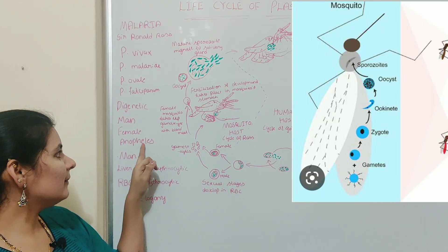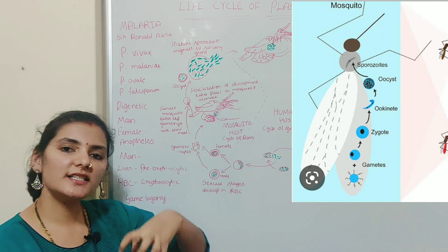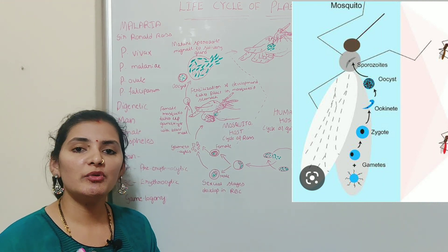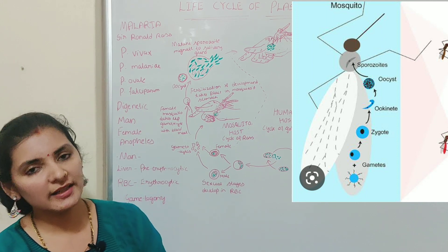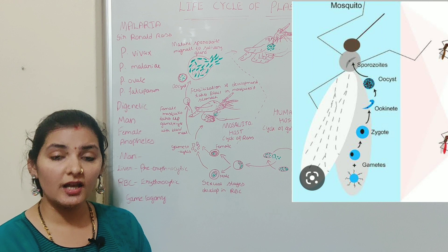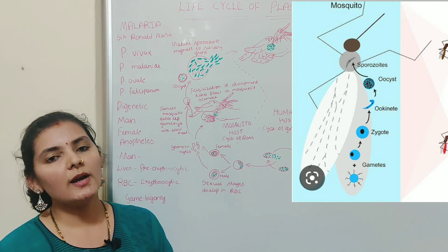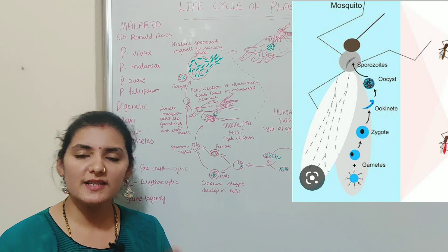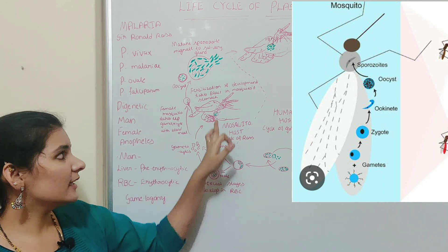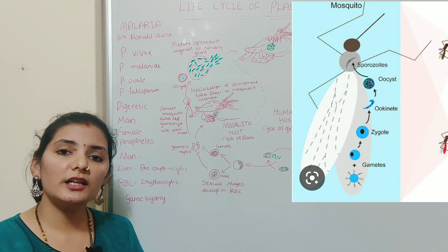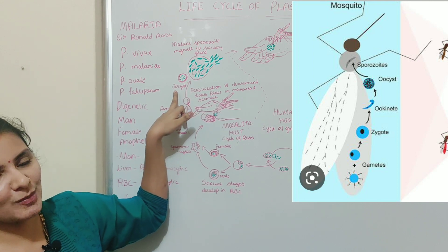Next is the life cycle of Plasmodium in the female Anopheles mosquito. When the female Anopheles mosquito sucks blood from a malaria patient, it ingests gametocytes along with the blood. Further development of gametocytes takes place inside the body of the mosquito. The gametocytes develop into gametes in a process known as gametogony. Macrogametocytes develop into female gametes (macrogametes) and microgametocytes develop into male gametes (microgametes). These macrogametes and microgametes unite to form a zygote, whose further development takes place inside the wall of the stomach.